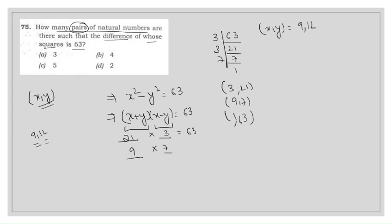The second factor pair is 9 and 7. x+y = 9 and x-y = 7. The numbers here are 8 and 1, since the sum of 8 and 1 is 9 and their difference is 7. So the second pair is (8, 1).